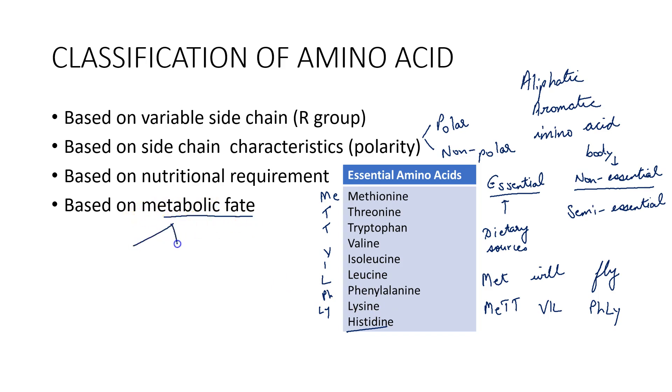Based on metabolic fate, amino acids can be ketogenic, glucogenic, or both.